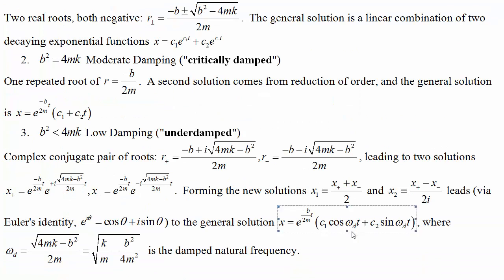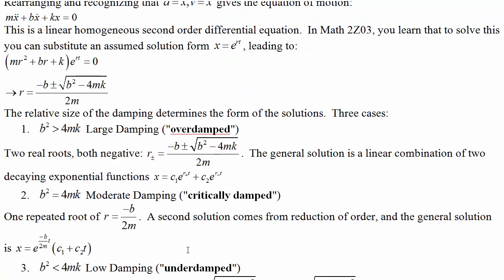The frequency of these cosine and sine terms are given by this root of k over m minus b squared over 4m squared, and this is the damped natural frequency.